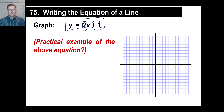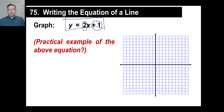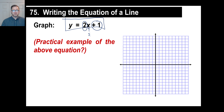Now the question is, how much money are you going to make? Obviously, the answer is: it depends on the number of kids I have. If I have zero kids, then I get $2 times zero, but I get $1, so I get $1. But if five kids show up, I get two times five — that's $10 — plus $1, so $11.